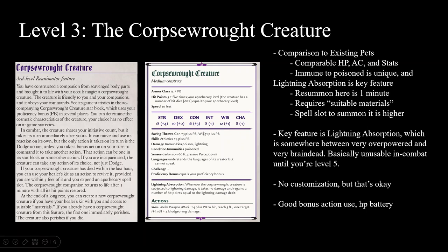The Corpse Art creature does have something special: Lightning Absorption. It's immune to poison damage, immune to lightning, immune to the poison condition, and if it would take lightning damage it instead regains HP. This is very strong — especially considering that if you have the Shocking Grasp cantrip, you can deal lightning damage for free and recharge the creature indefinitely between fights. This means the Corpse Art creature has much longer longevity than the pets of any other pet subclass.